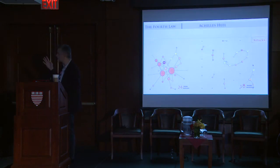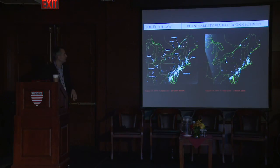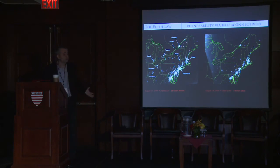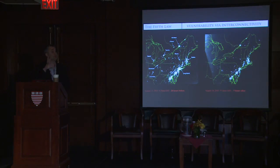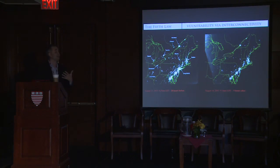You can destroy the functionality of a network before breaking it into pieces. That takes me to the fifth law: vulnerability due to interconnectivity. The best example is the power grid, where local breakdowns lead to large failures across the entire grid — an example of how networks export local problems and make them fully global. Much of the financial crisis we see today is the result of such cascading failures spreading along the network. If we had not had financial networks, problems would have stayed local.